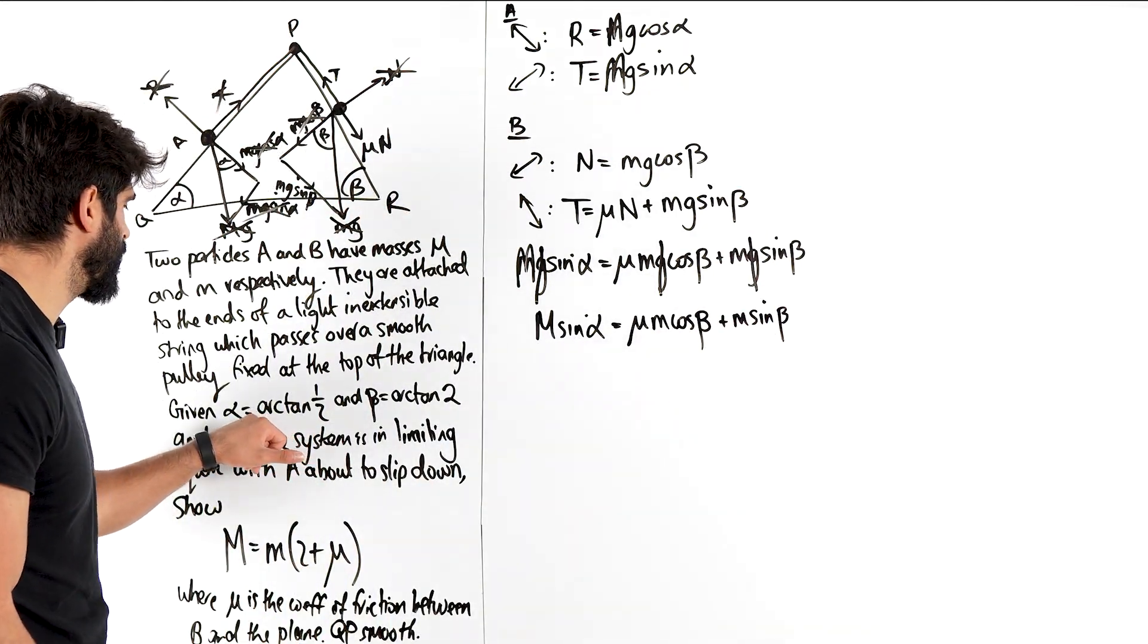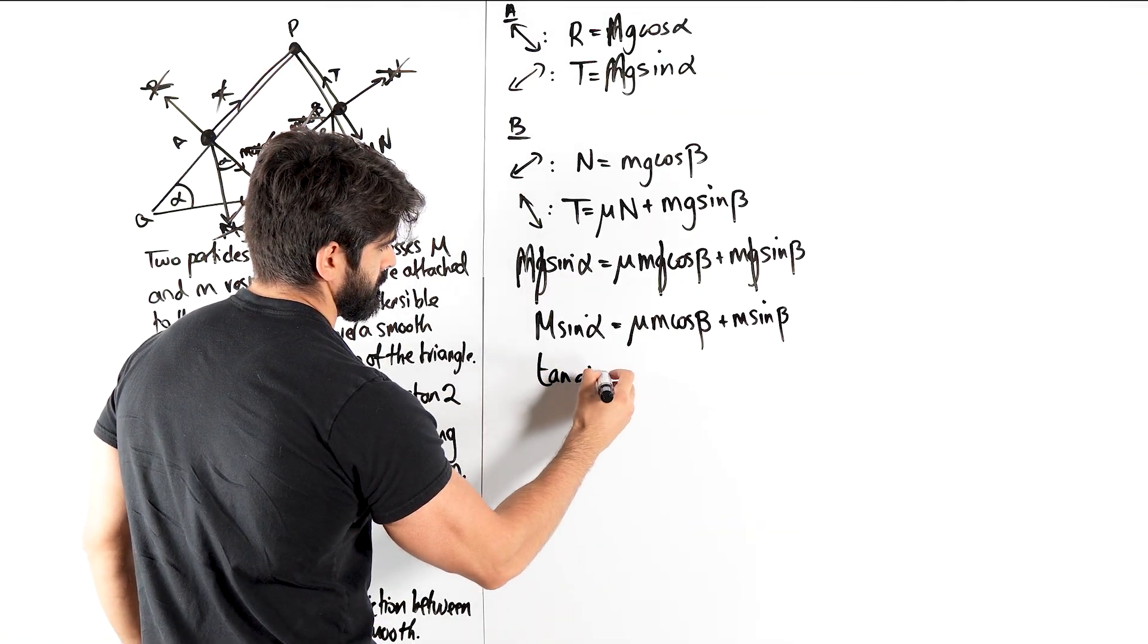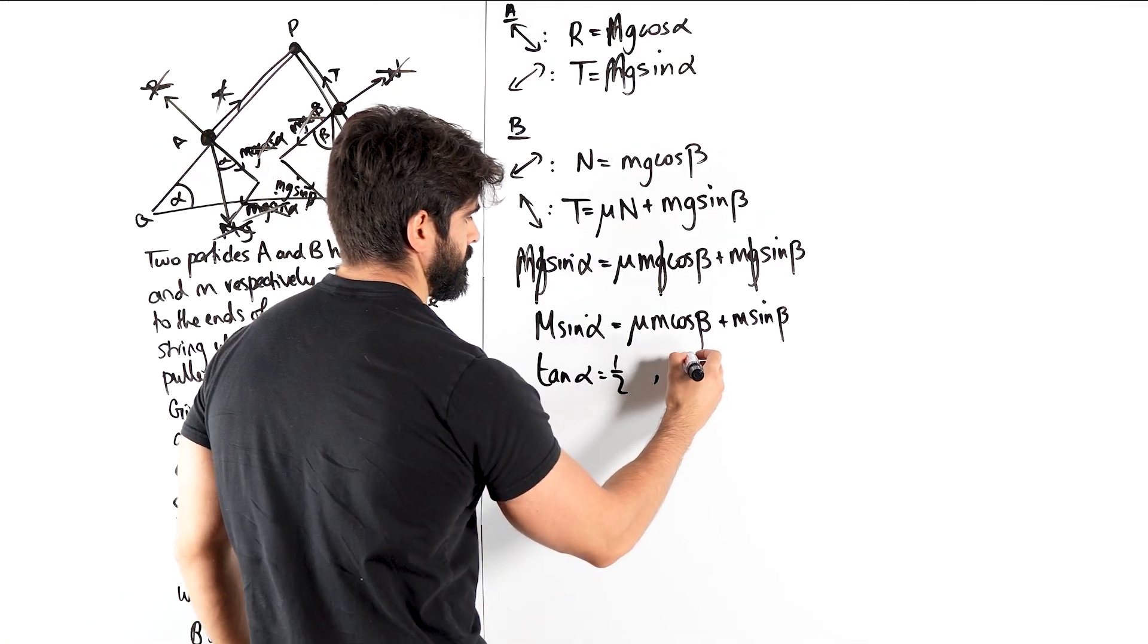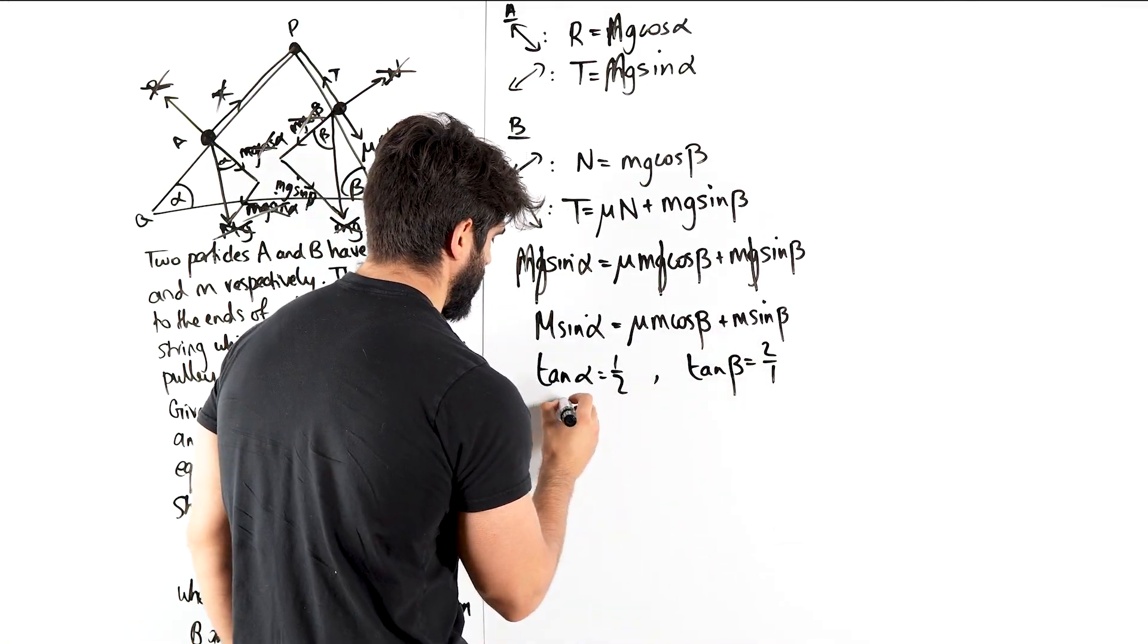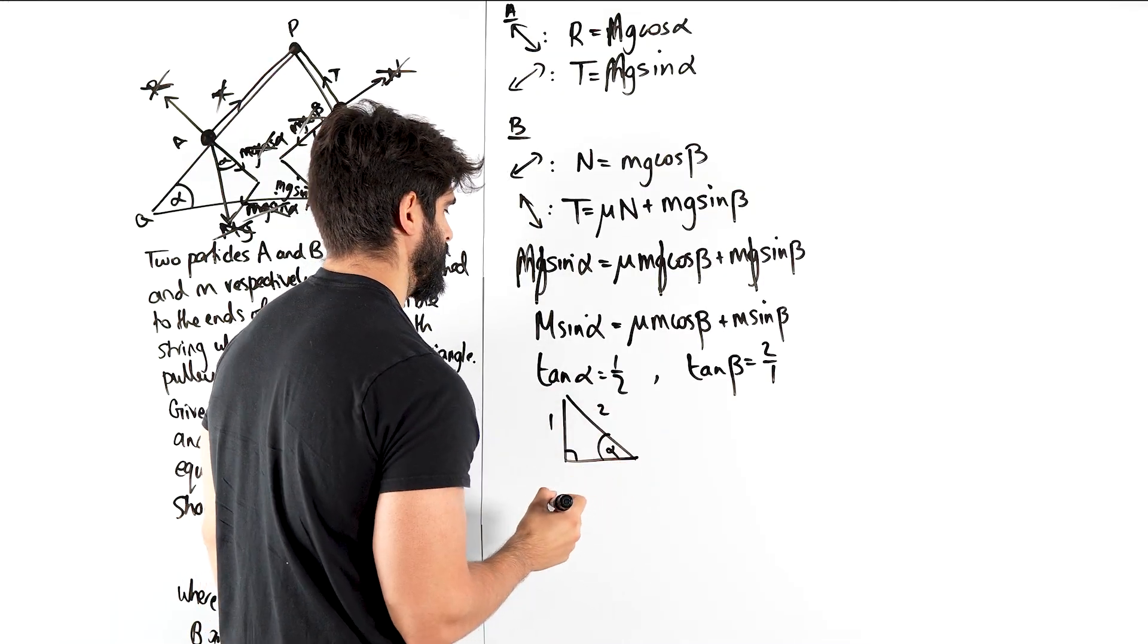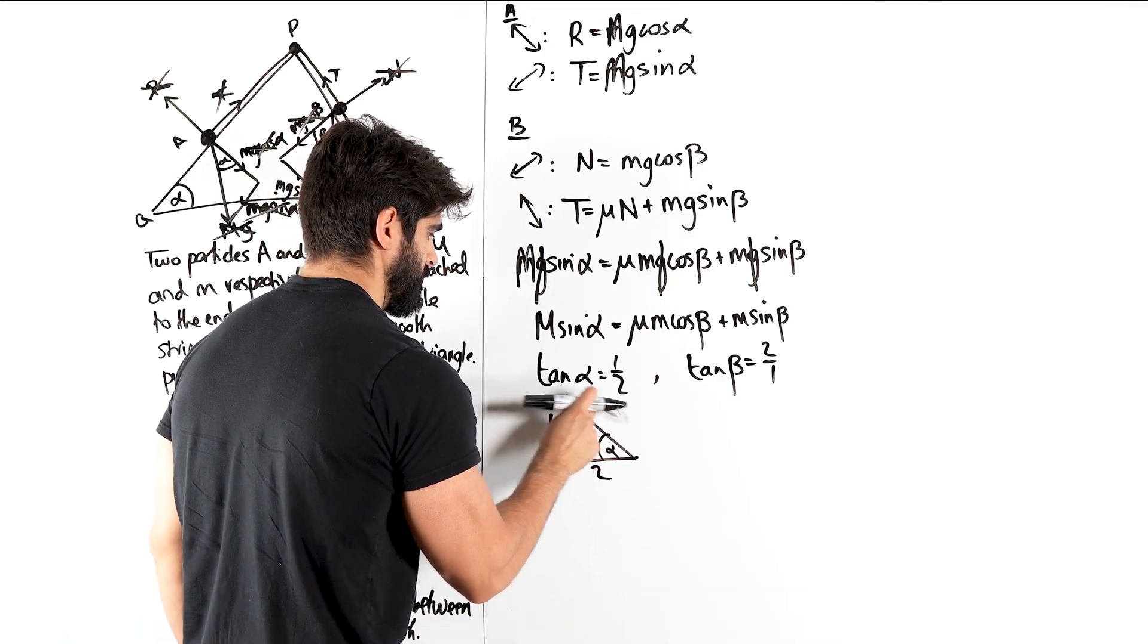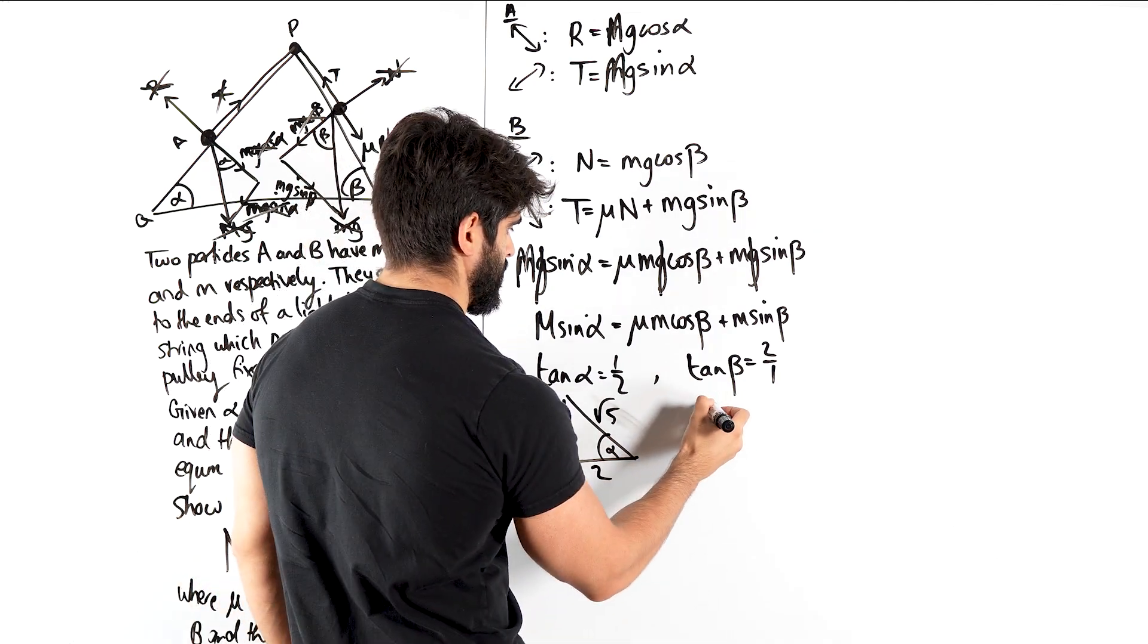Now here we're going to say alpha is arctan half, so that means tan alpha is a half. And we have tan beta is 2, which is 2 over 1. Looking at our right angled triangles, tan is the opposite over the hypotenuse. No, no it's not. It's the opposite over the adjacent. This will be root 5 doing some cheeky Pythag.